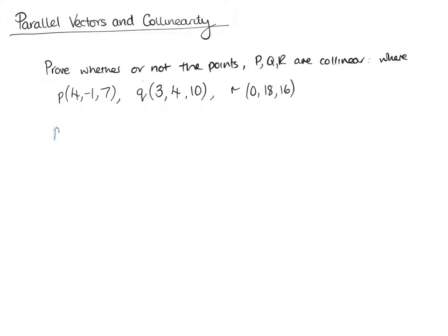So we do PQ, which is Q take away P — remember, it's always the second one take away the first. So we get (3, 4, 10) minus (4, -1, 7). We get 3 take away 4 which is -1; 4 take away minus 1 which is 5; and 10 take away 7 which is 3. So PQ = (-1, 5, 3).